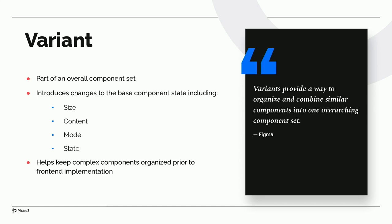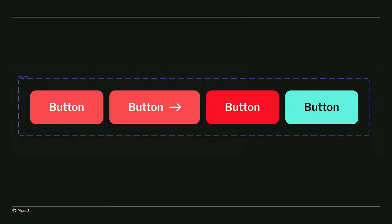Next is a variant. Variants provide a way to organize and combine similar components into one overarching component set. With variants, we can introduce subtle changes to a component like the size, content, mode, or state — so a hover or focus state, for example. It really helps keep all of our complex components organized when we pass things off to the front-end devs. Here's that same button, but now we've added variants — support for adding an icon, a hover or focus state, and a secondary button treatment with a different background and text color.